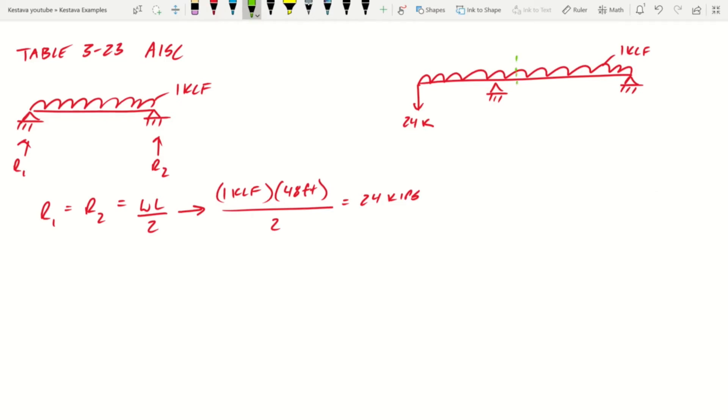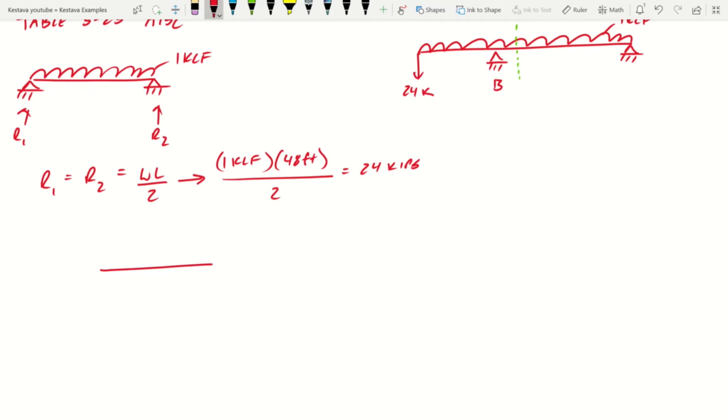table 3-23 in our AISC manual, but we're going to go to the propped cantilever section. And what we're first going to analyze as a propped cantilever with a distributed load. So we know we have 1klf. And again, let's remember we're trying to find right here, just inside of reaction B, just the right-hand side of reaction B.